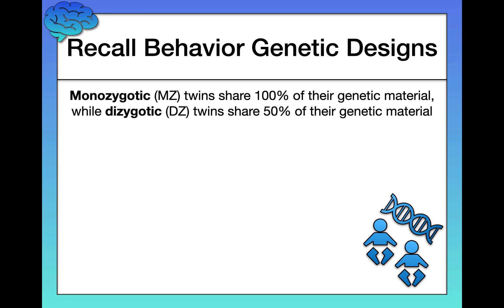We've learned in the past about behavior genetic designs, specifically heritability, in the nature versus nurture video. I want to reiterate this distinction between monozygotic and dizygotic twins — MZ and DZ. Monozygotic twins, also called identical twins, share 100% of their genetic material. Dizygotic twins, in contrast, share 50% of their genetic material. This difference is really useful for measuring and assessing genetic differences in anything.